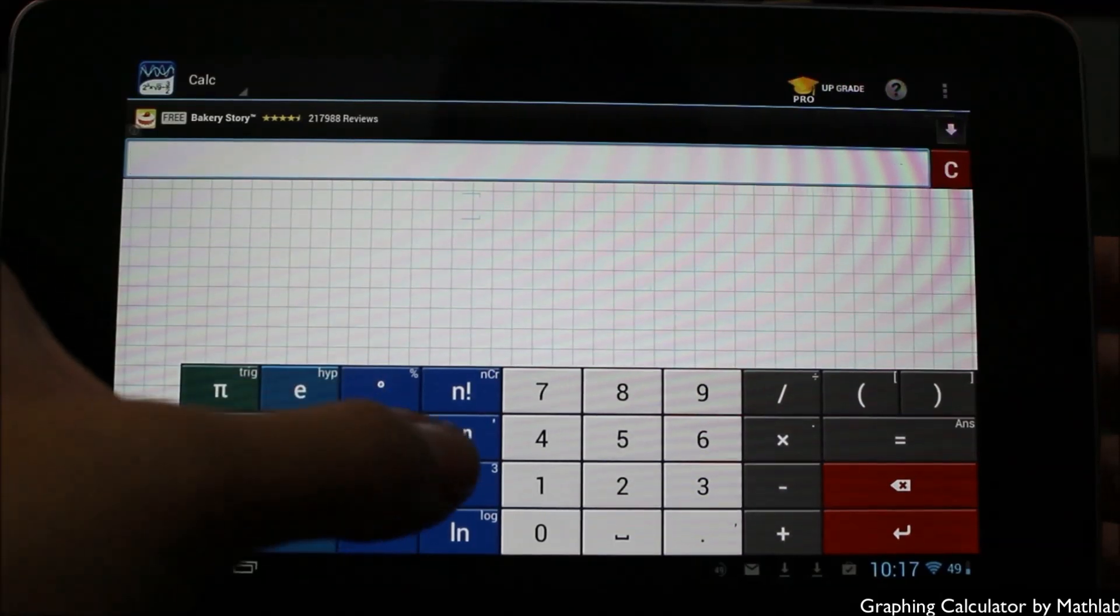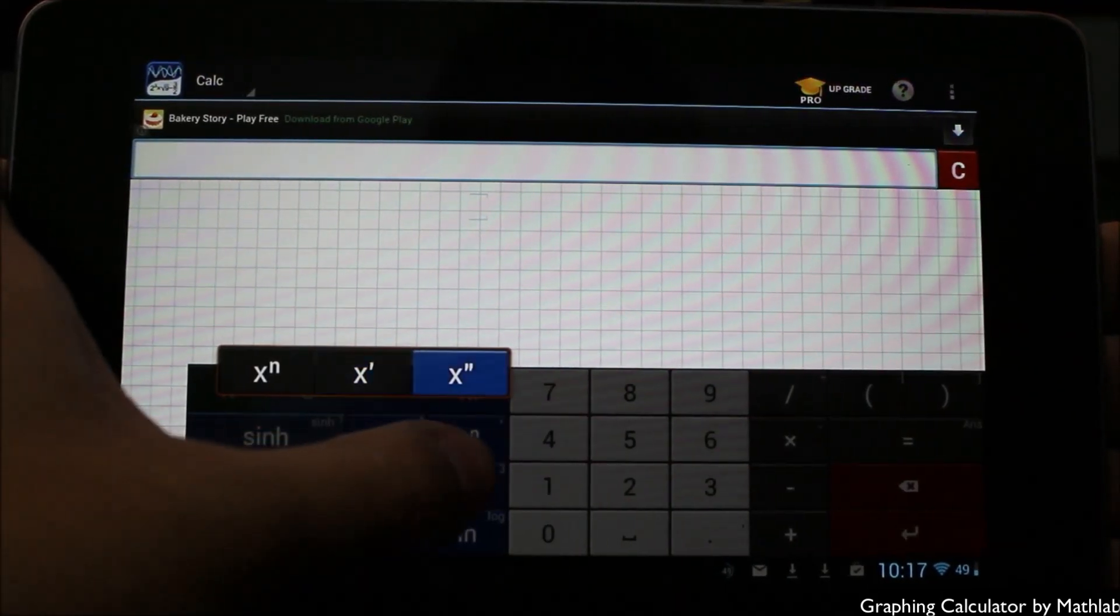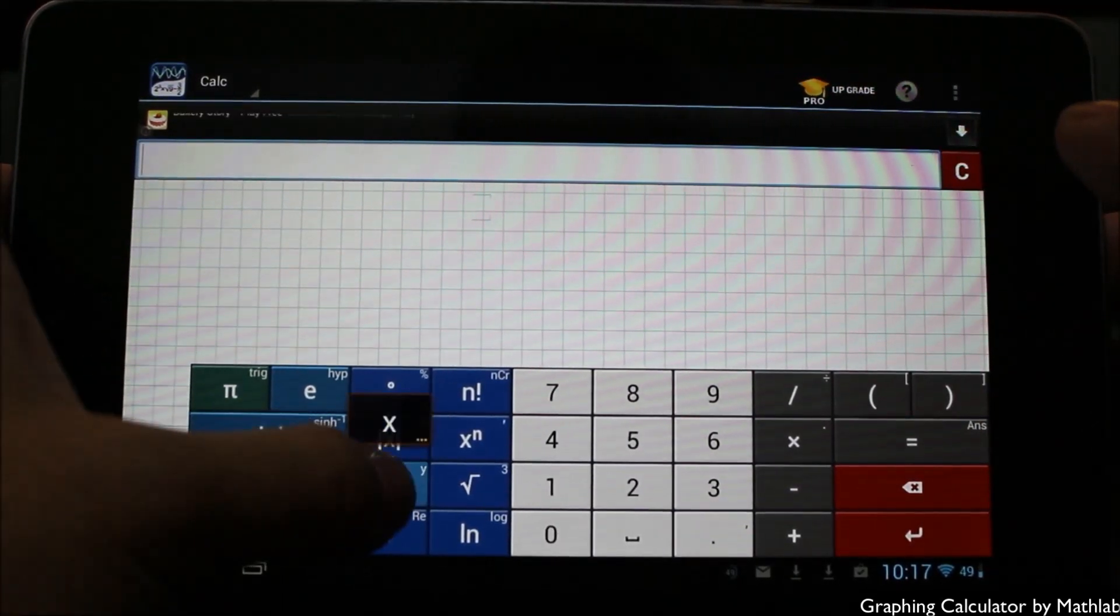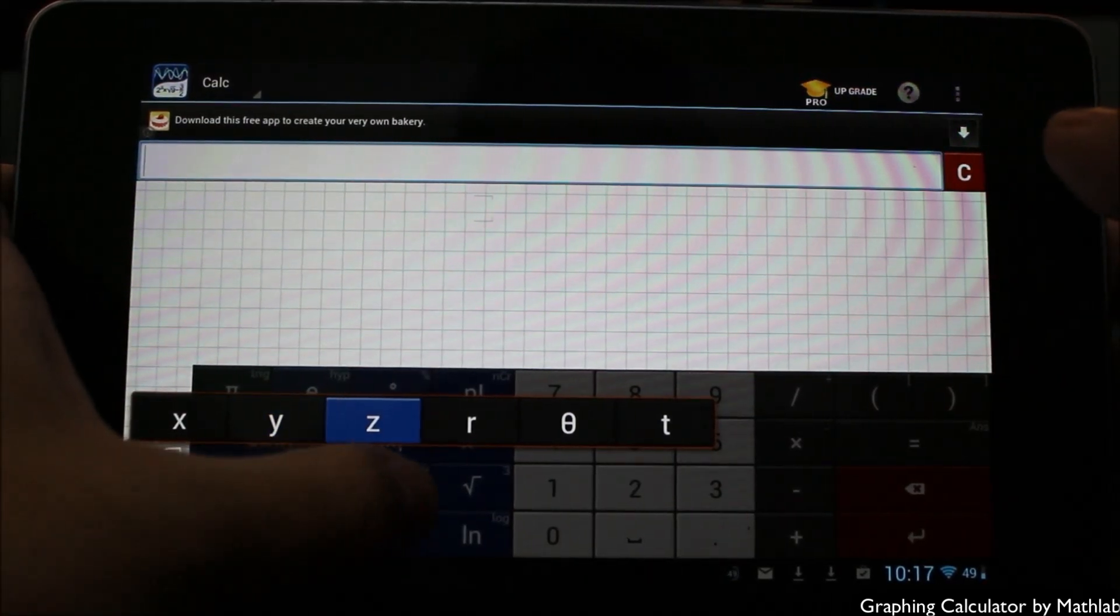Now other options, you have things like first derivative and second derivative. You can choose between the two by holding and letting go on the X here. Also you have the variables. If you want to get more variables, you hold on X and you have options for Y, X, Z, R, etc.